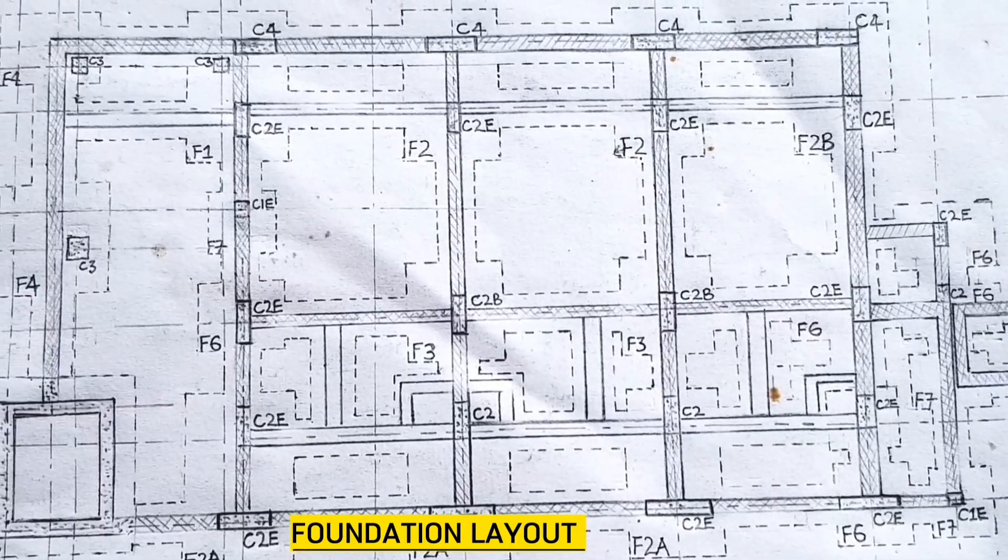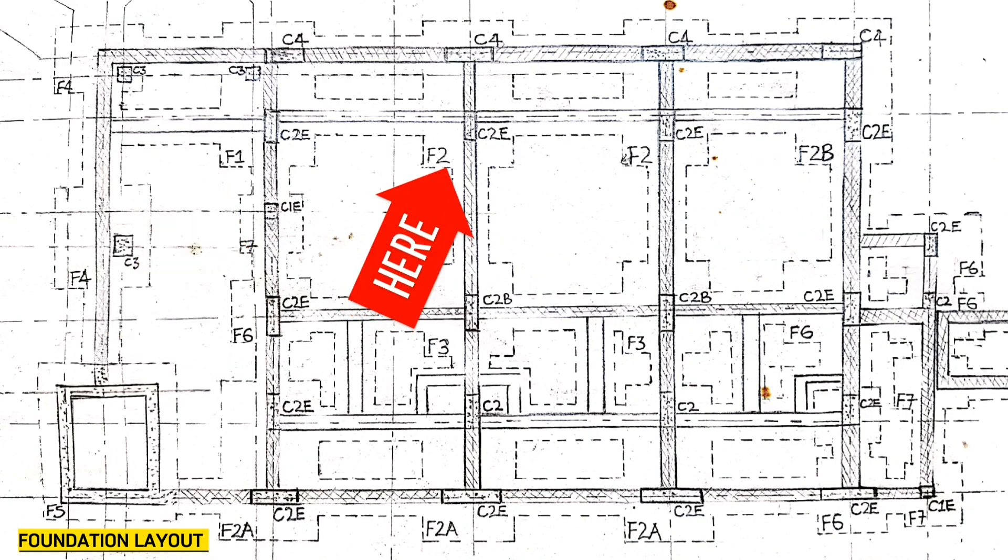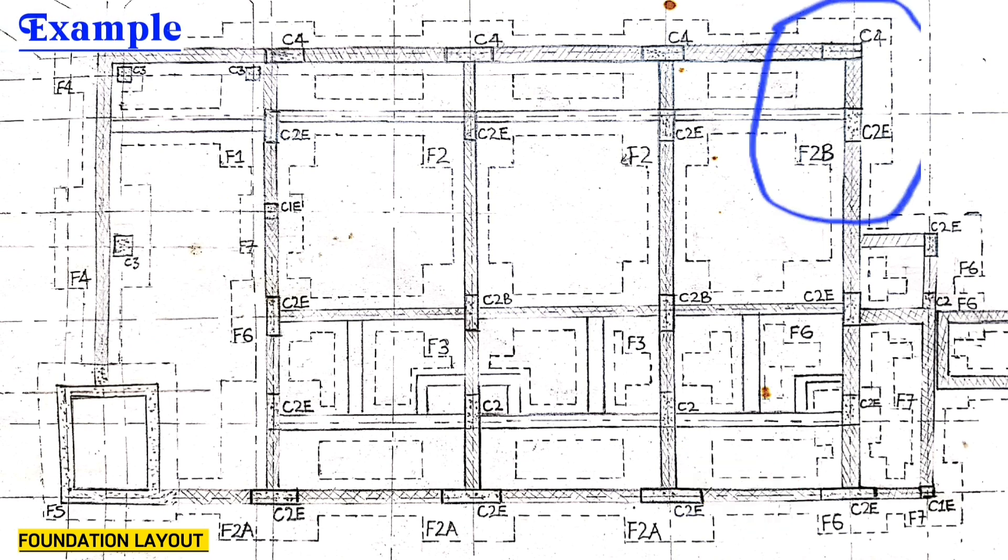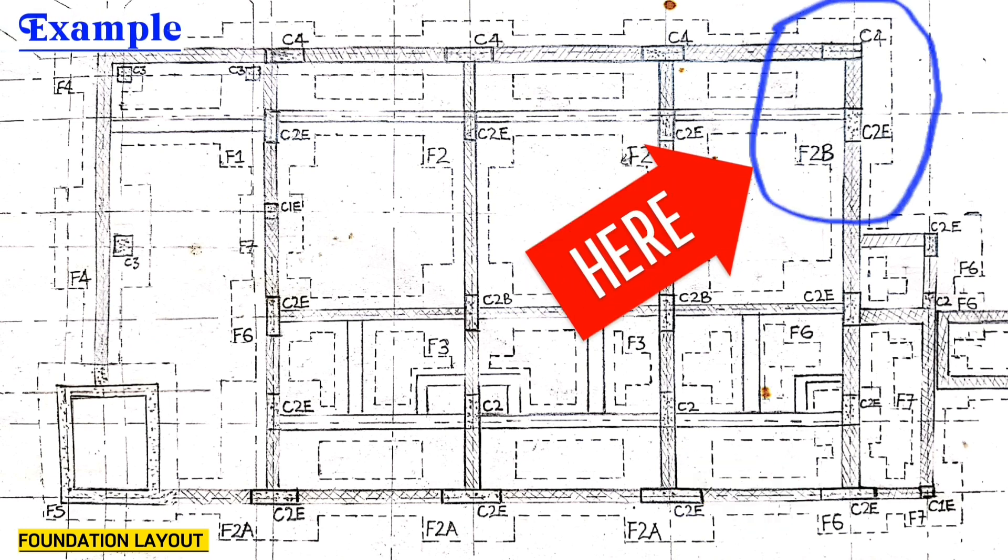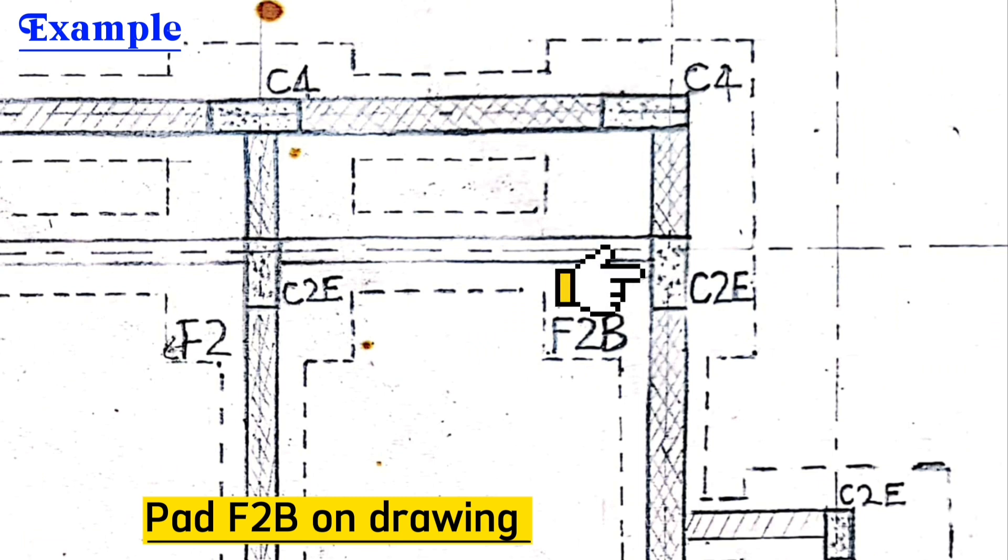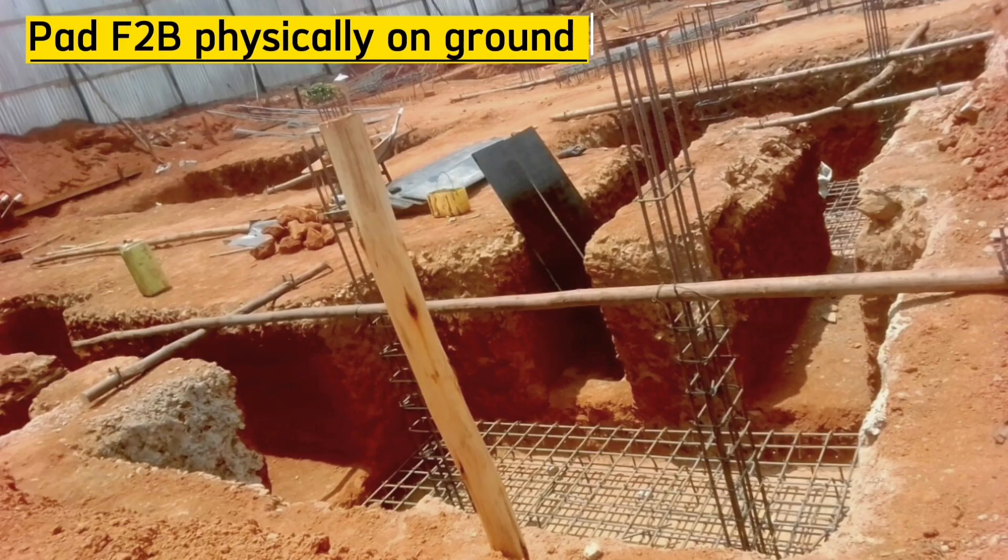Let's take a look at this example of pad F2B with column C4 and column C2E. Here it will look like this in reality, physically on ground.